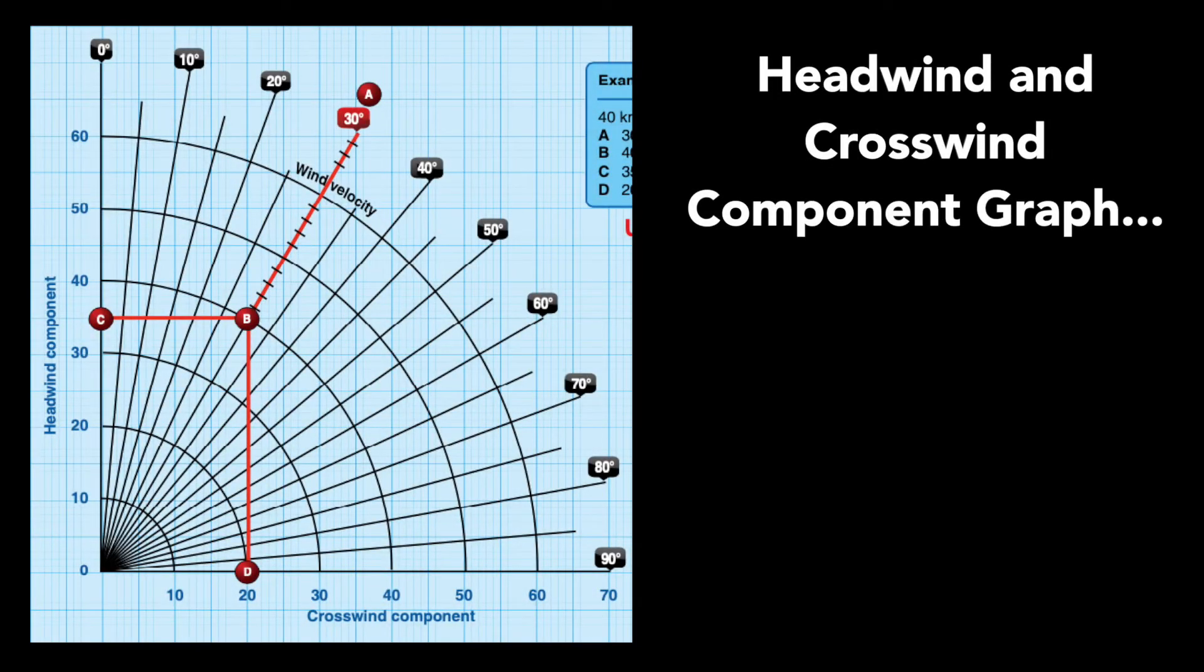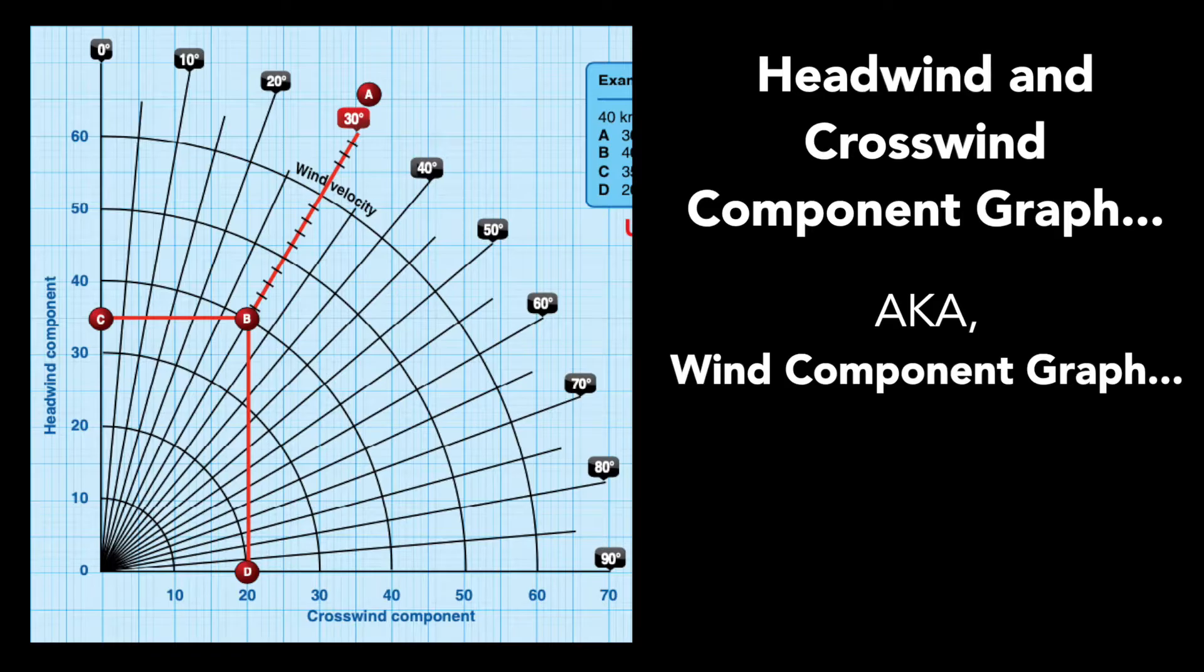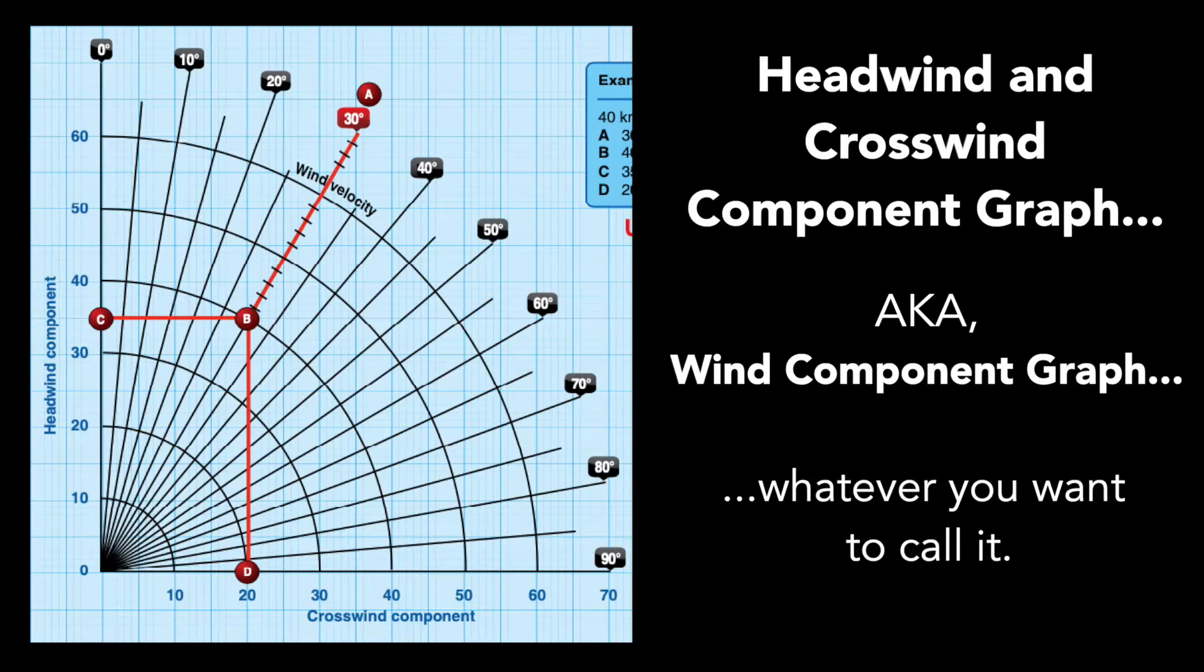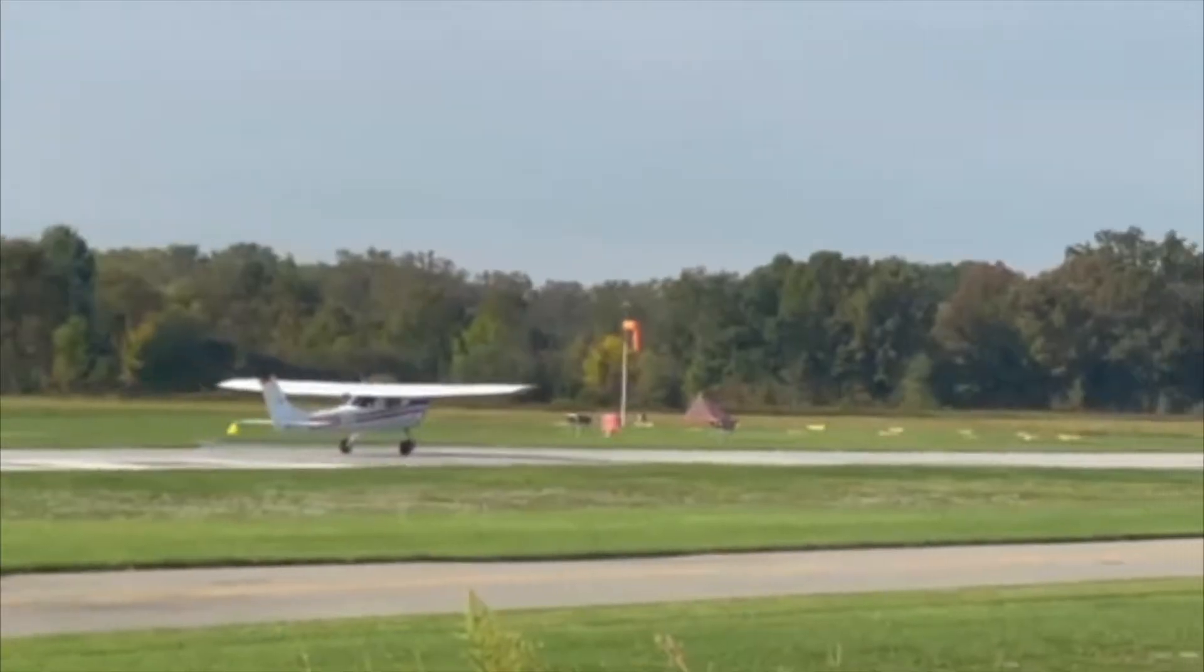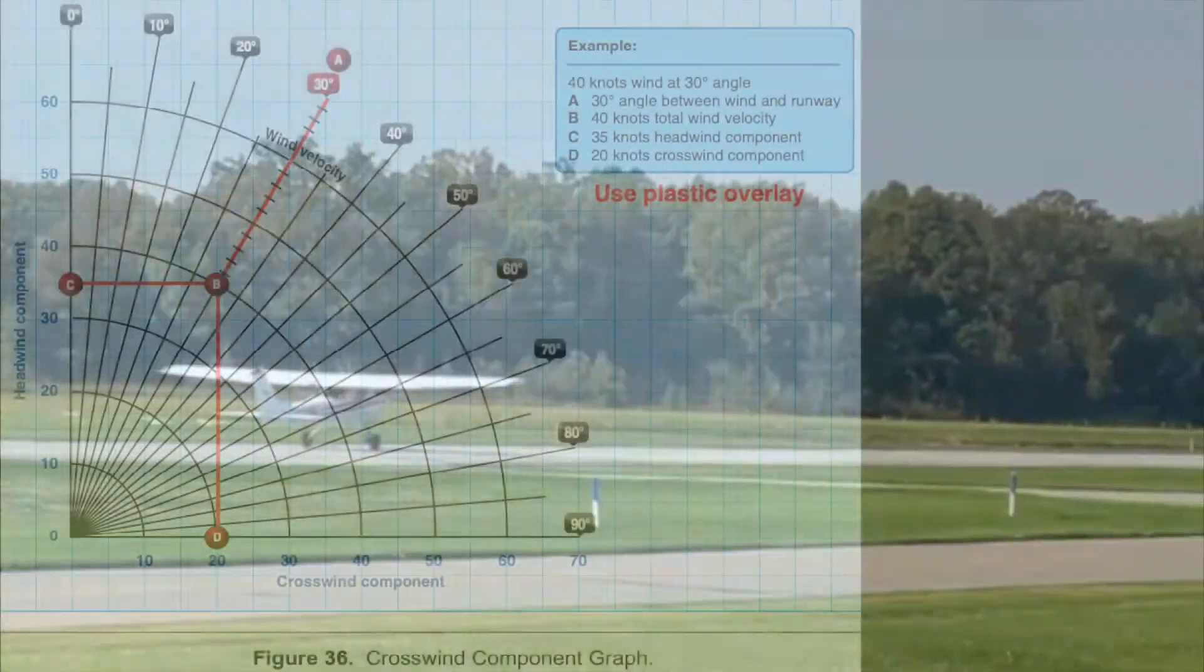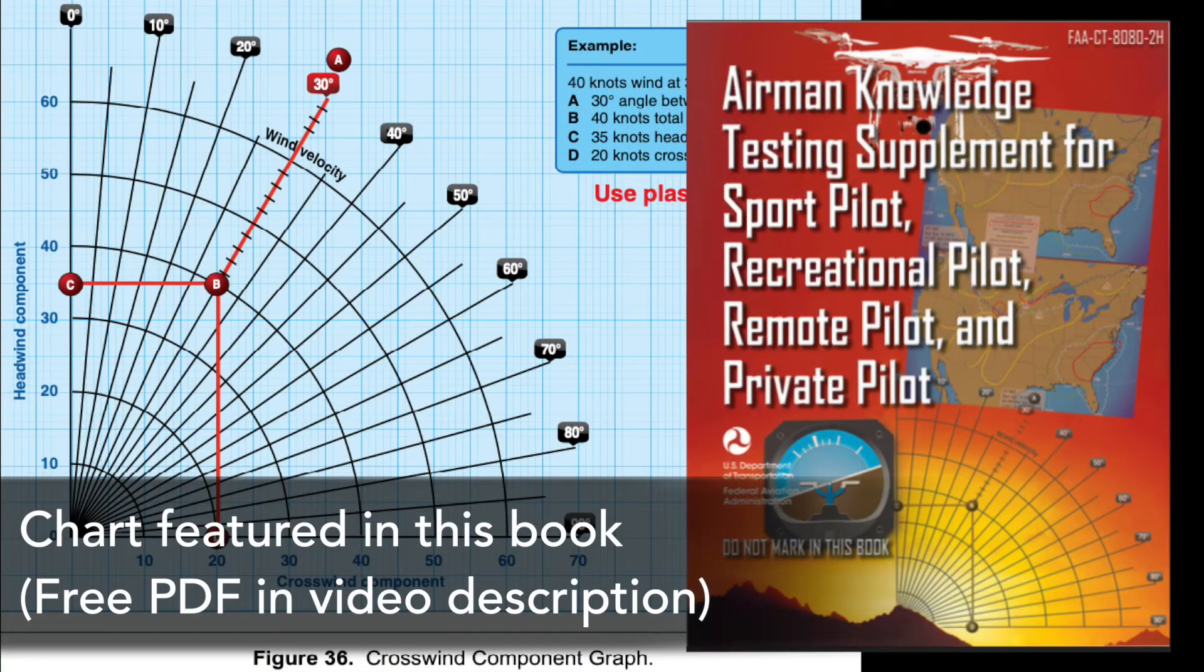The headwind and crosswind component graph, or the wind component graph, looks like a spiderweb in a corner. This graph is often applied to takeoff and landing situations, particularly in the private pilot written test.